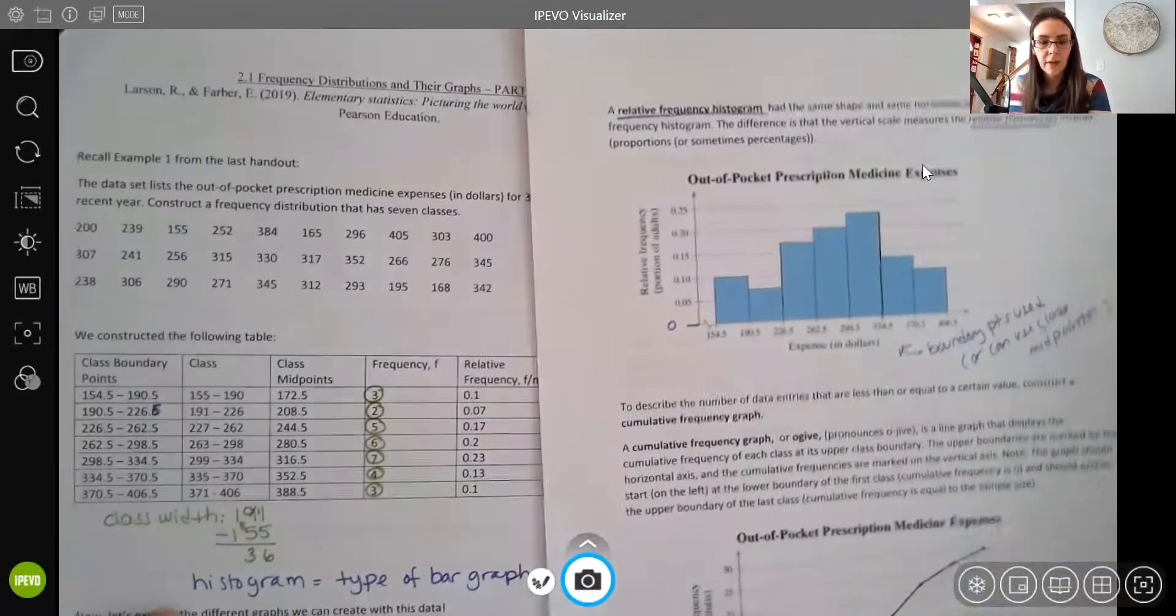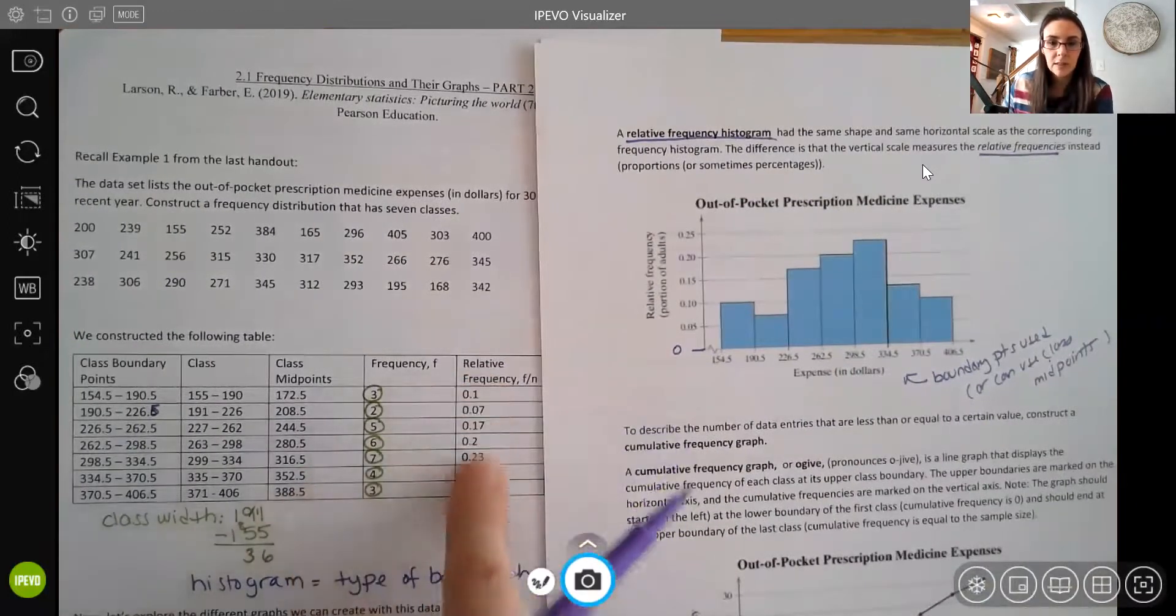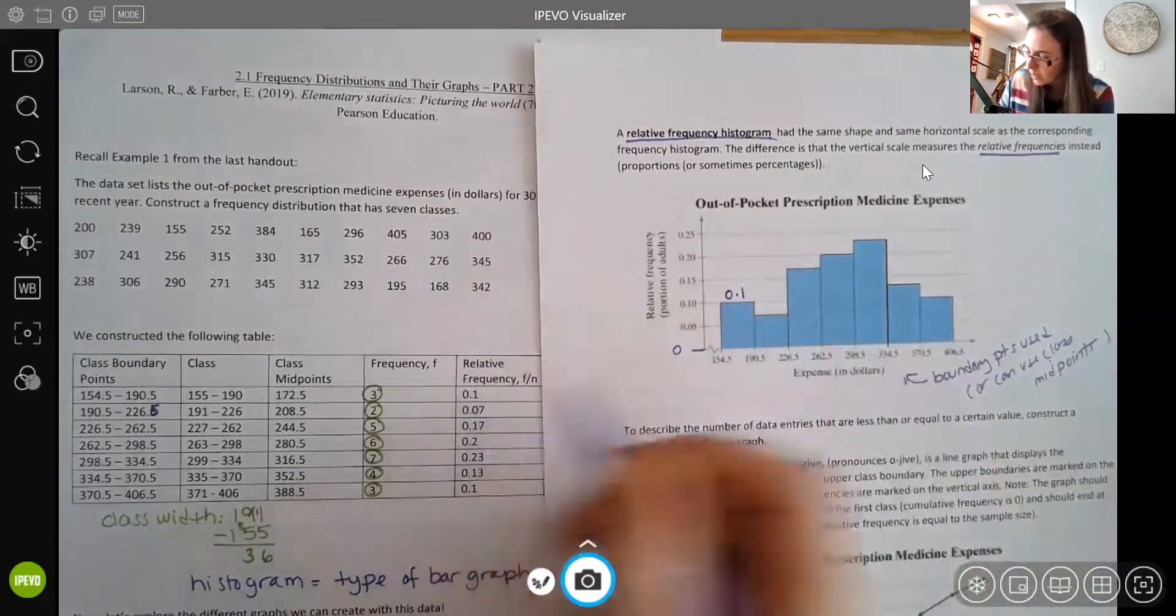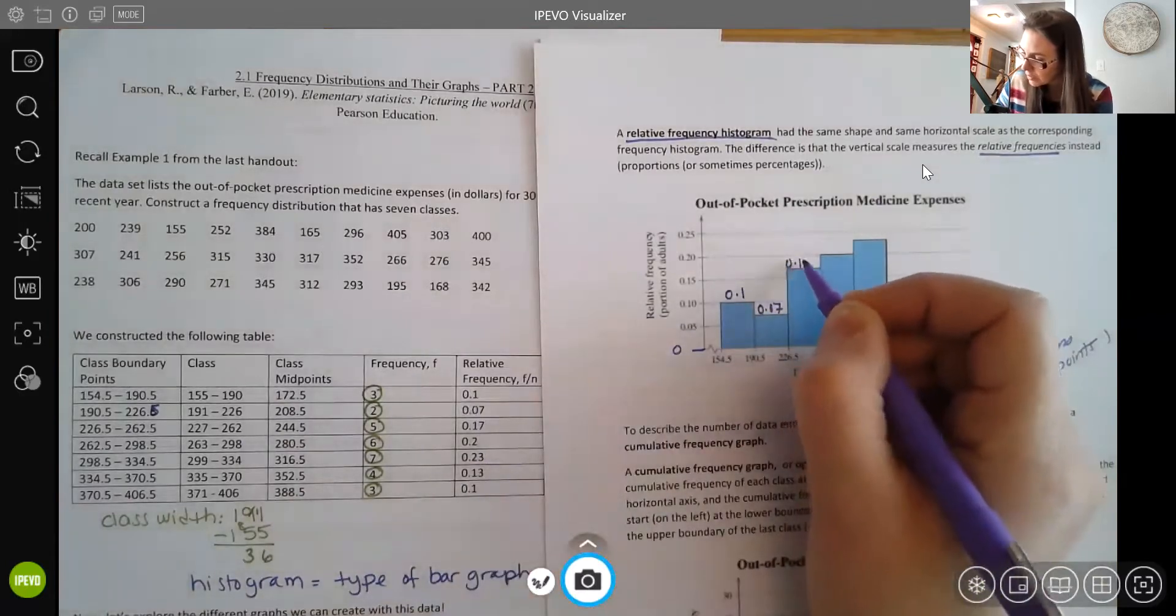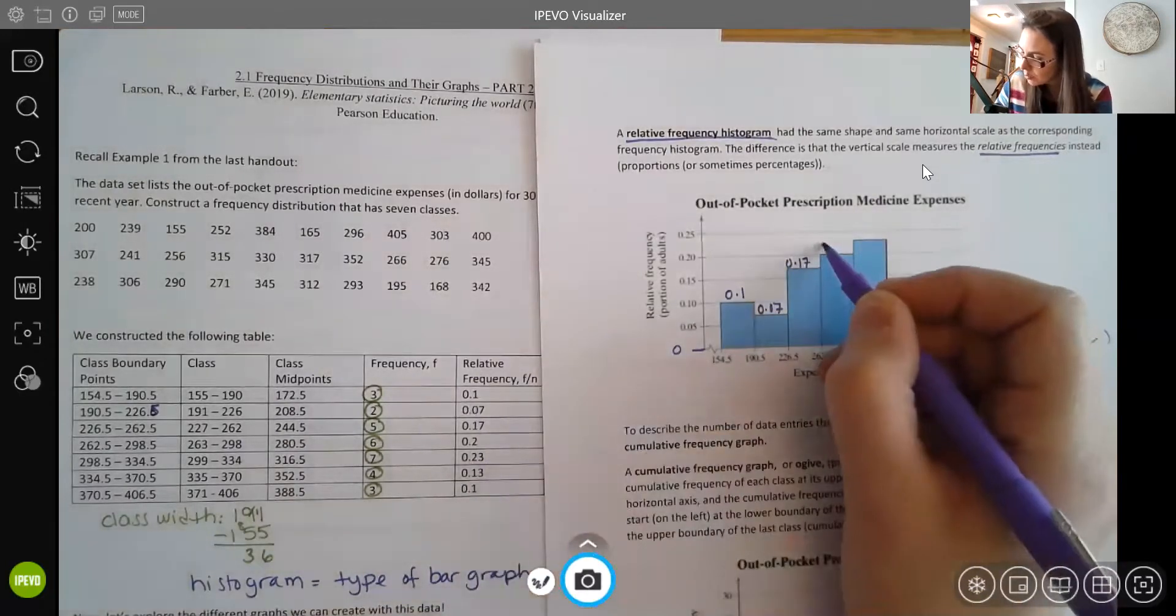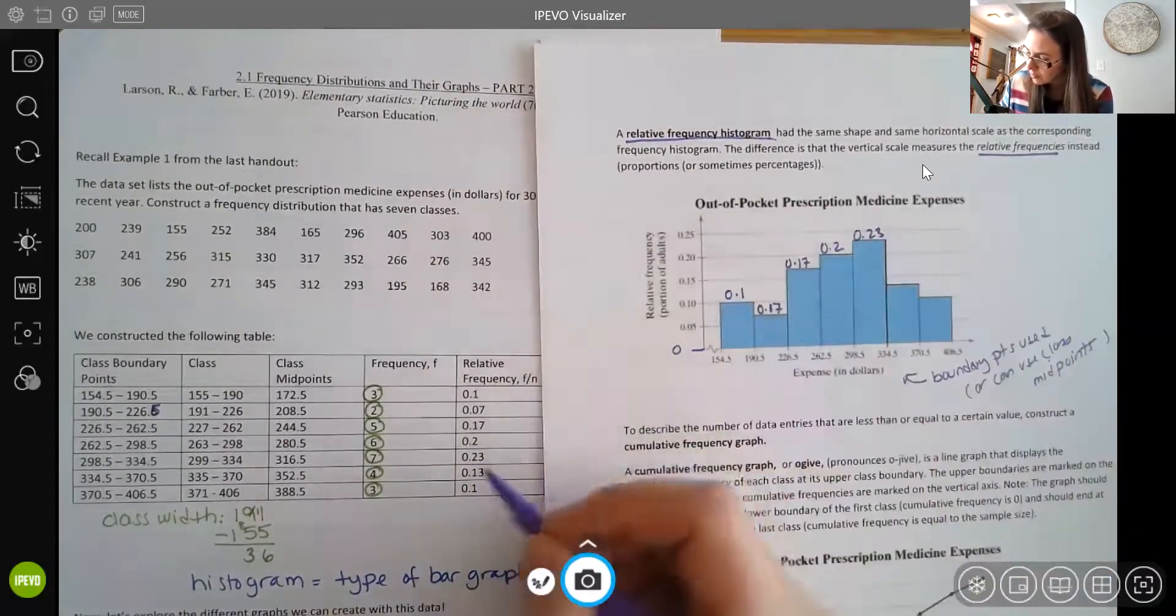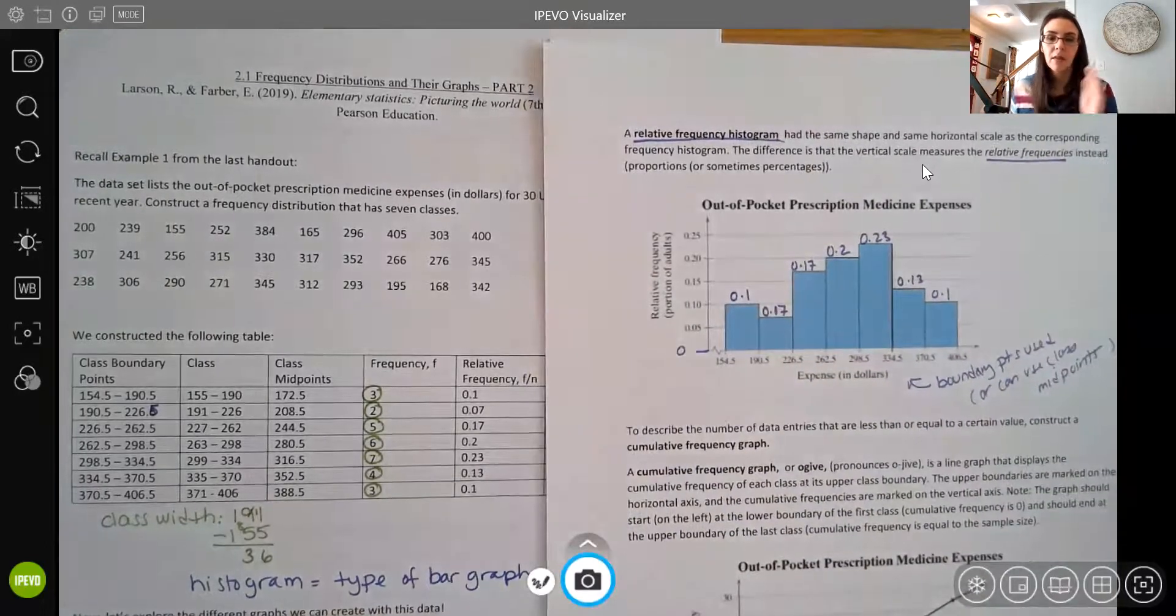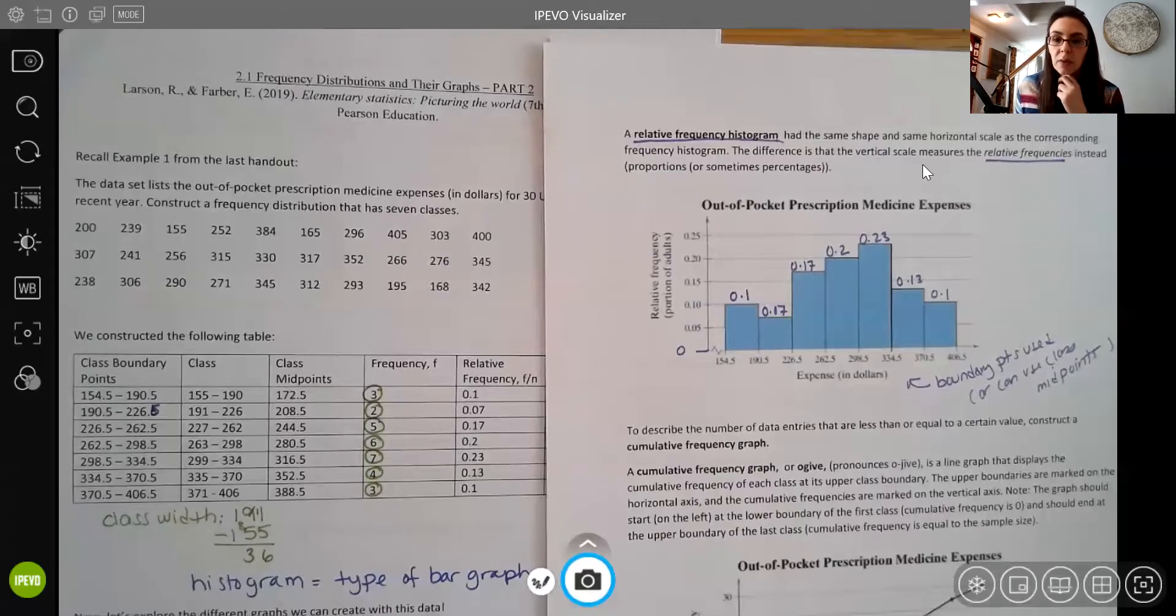So if I go back to my original data of my relative frequencies, that's what you're seeing here. So this first height is that 0.1, and then this is that 0.07. Here we have 0.17, here 0.2, 0.23, 0.13, and 0.1. Same idea, but that y-axis is based on those proportions, those relative frequencies, instead of the actual counts, the actual frequencies.